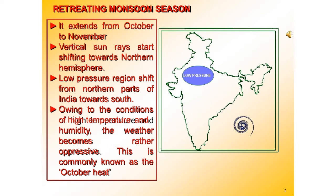The retreat of the monsoon is marked by clear skies and a rise in temperature. Day temperatures are high, nights are cool and pleasant. The land is still moist. Owing to the conditions of high pressure and humidity, the weather becomes oppressive during the day.